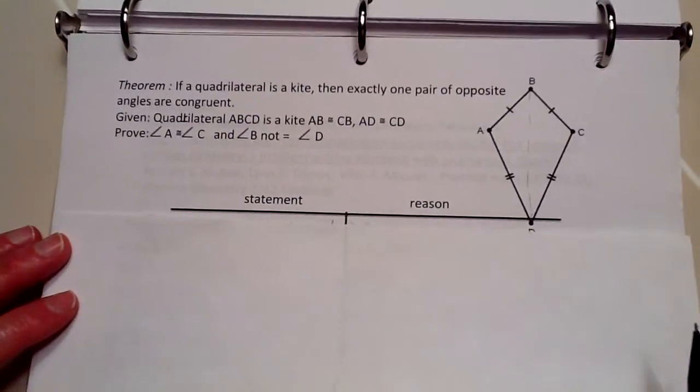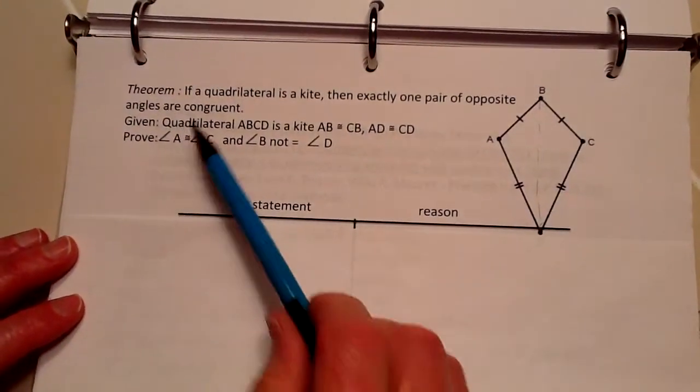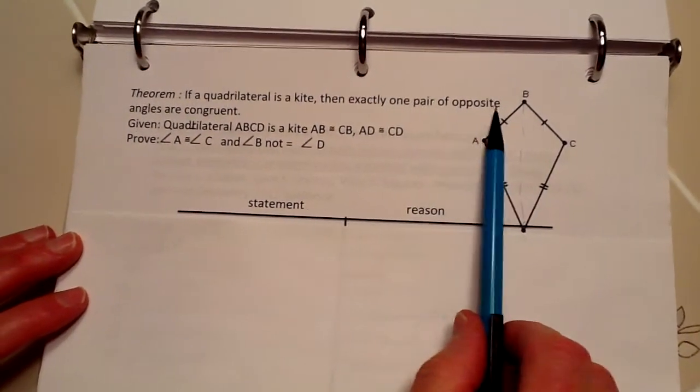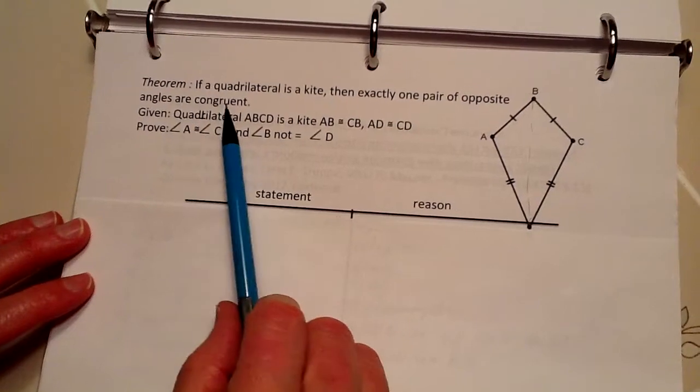We are now going to prove the theorem. If a quadrilateral is a kite, then exactly one pair of opposite angles are congruent.